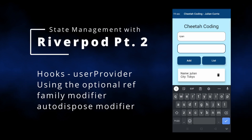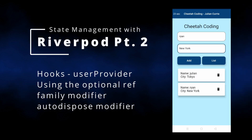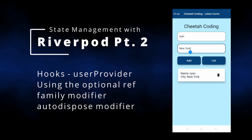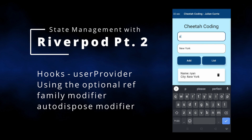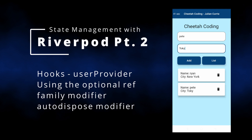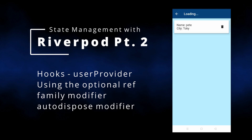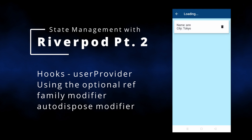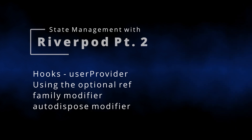Hello and welcome to Cheap to Coding. About a week ago I did a video about RiverPod in Flutter, which is a state management library, and I wanted to do a part two to discuss a few other things that could be useful with RiverPod. Those include using hooks for RiverPod, adding a new library, and two modifiers: the family modifier and the auto-dispose modifier.